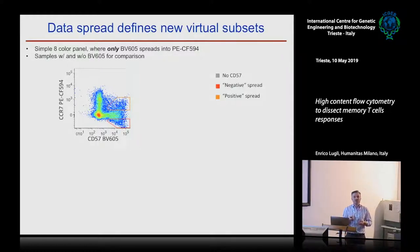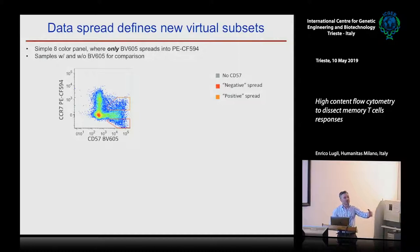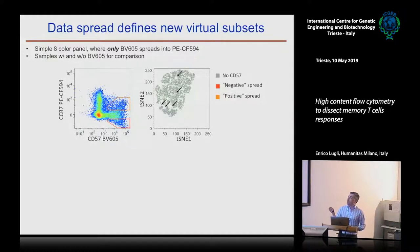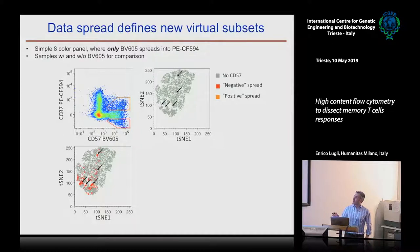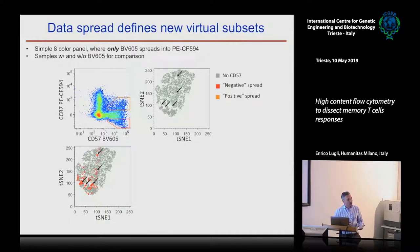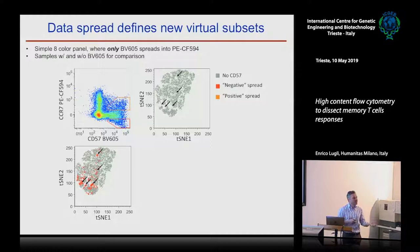The other problem was spreading error. We designed a very simple panel with only one single combination giving spread — in this case BB605-CD55 into CCR7. Whenever you have spread, your cells can go either up or down. If you plot the tSNE without this parameter and then overlay the negative spread, it actually fills holes in the tSNE map. This means we're creating new populations that don't really have a biological meaning. The tSNE identifies these as different — but this is a computational drift introduced by the nature of the data. You have to be careful when using these tools.